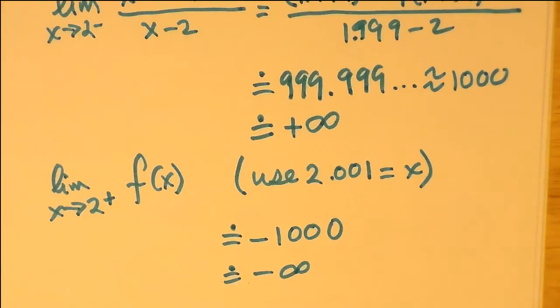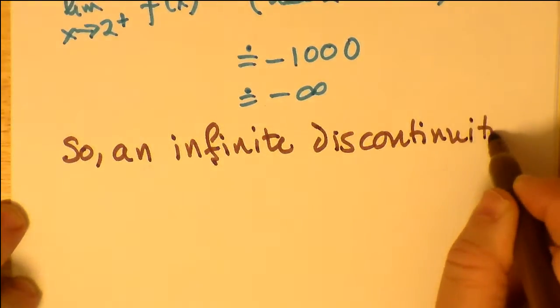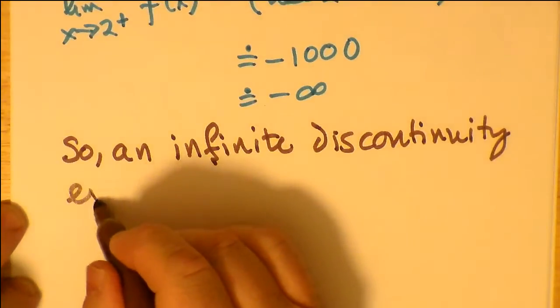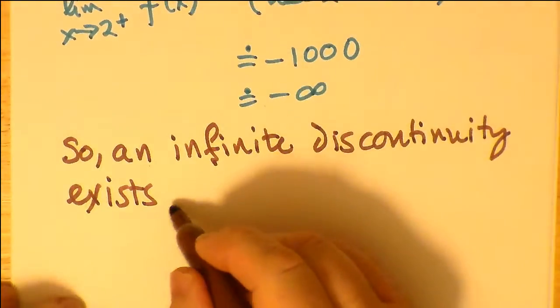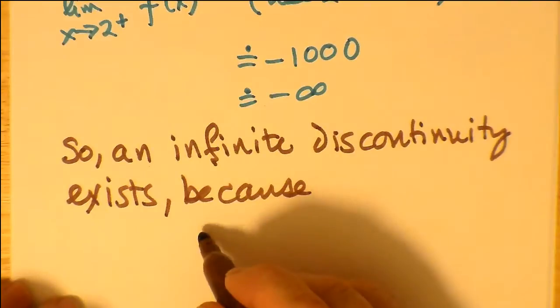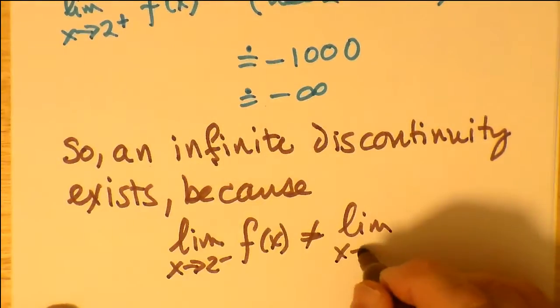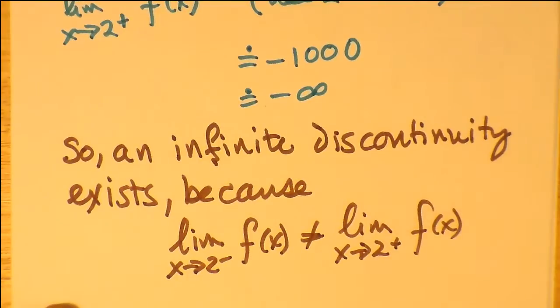And so now, as you can see here, clearly the two sides could not be more unequal. So as we can see, case one is shown in this set of limits. So an infinite discontinuity exists because, as we just demonstrated, the limit as x approaches 2 from the left of f(x) is not equal to the limit as x approaches 2 from the right of f(x).